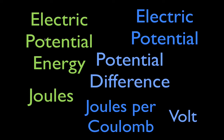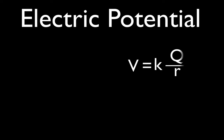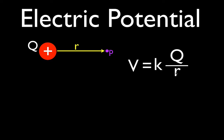Electric potential energy, or changes in electric potential energy, is simply measured in joules. To calculate electric potential, we need k — Coulomb's constant, 9 times 10 to the 9th newton meter squared per coulomb squared — and a single charge Q. This is the charge that creates the potential; it's our central charge. Then we have some distance r away from that charge, and at that distance there's just some point P — there's nothing actually there. The potential is directly related to the amount of charge, and as you move away from the charge, the potential decreases because it's inversely proportional to the distance r.